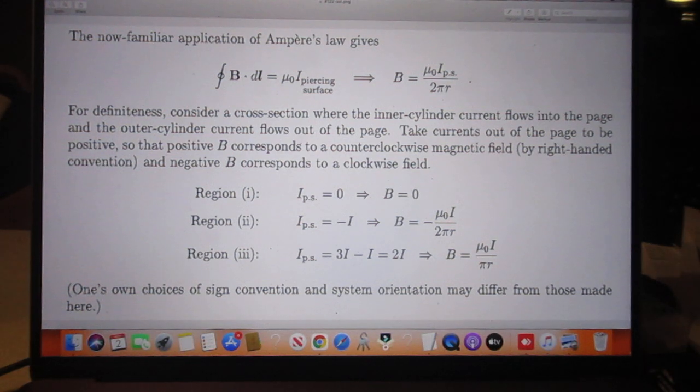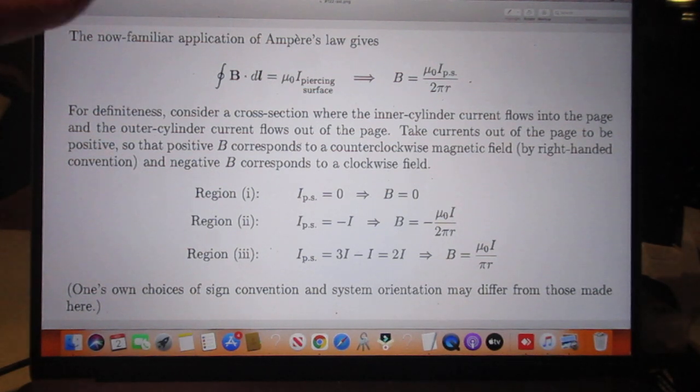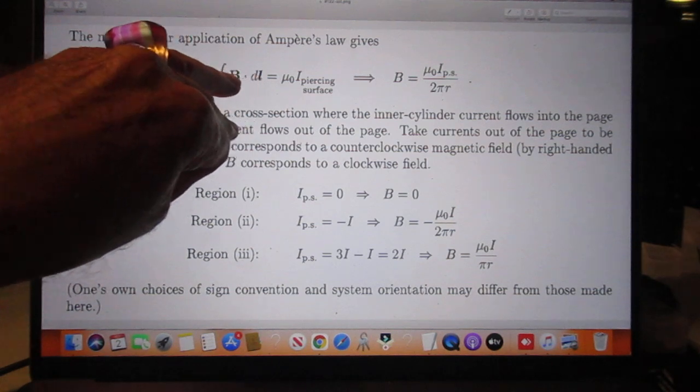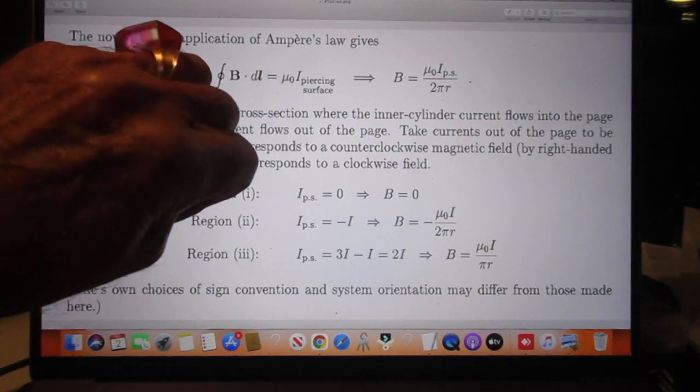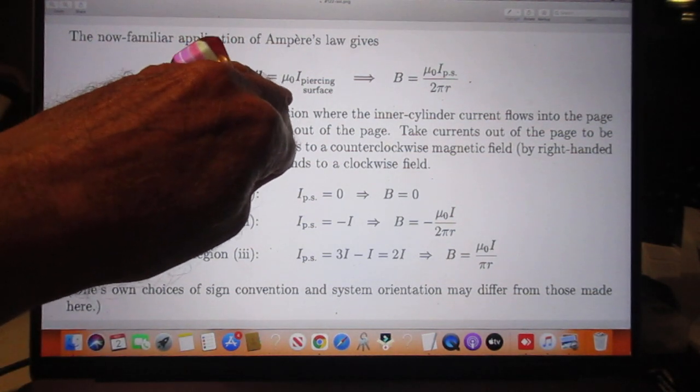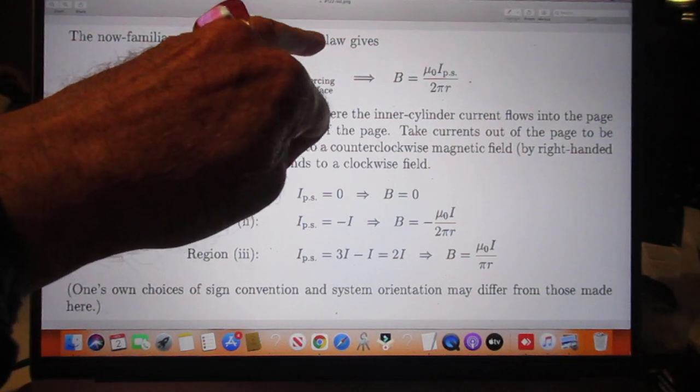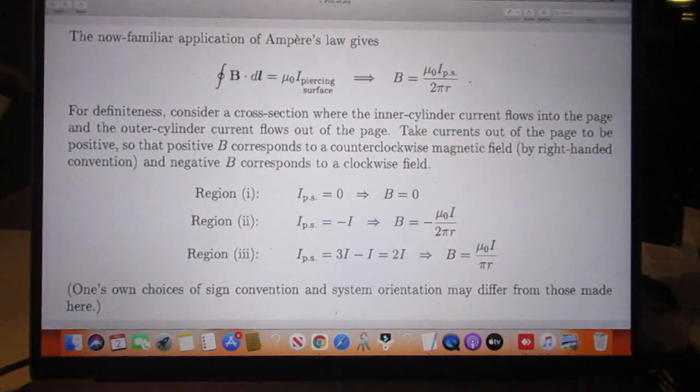All three answers immediately follow from Ampere's law. The closed-loop integral of B·dl is μ₀ times I, piercing that surface. What does that mean?